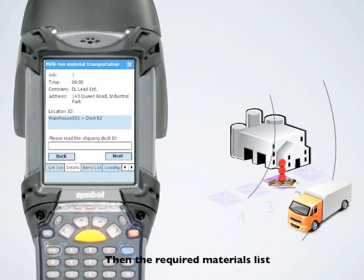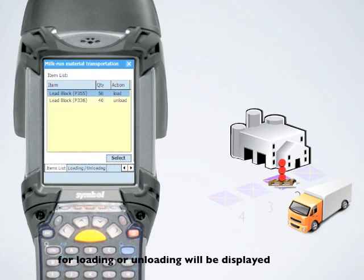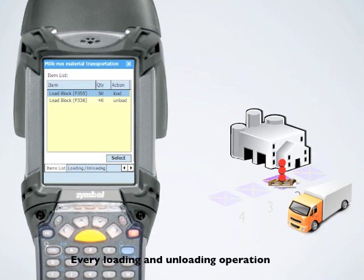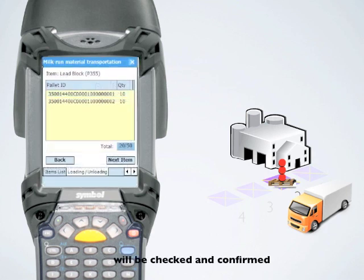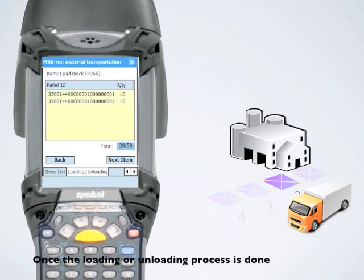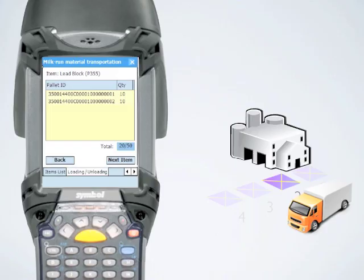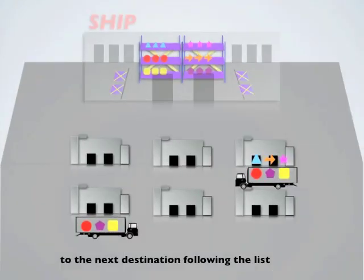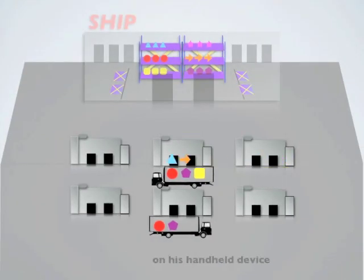Then, the required materials list for loading or unloading will be displayed on his handheld device. Every loading and unloading operation will be checked and confirmed with the handheld device. Once the loading or unloading process is done, the truck driver will move to the next destination following the list on his handheld device.